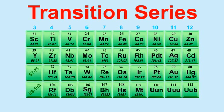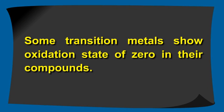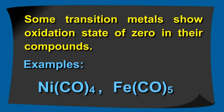The highest oxidation state shown by any transition metal is +8. For example, ruthenium and osmium show the highest oxidation states of +8 in some of their compounds. Some transition metals show oxidation states of 0 in their compounds. Ni(CO)₄ and Fe(CO)₅ are common examples.